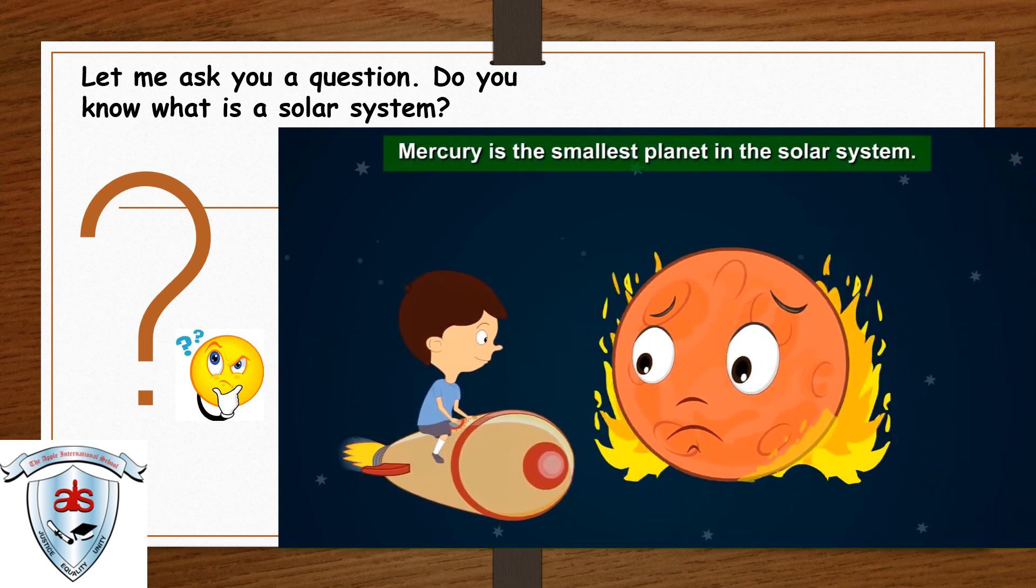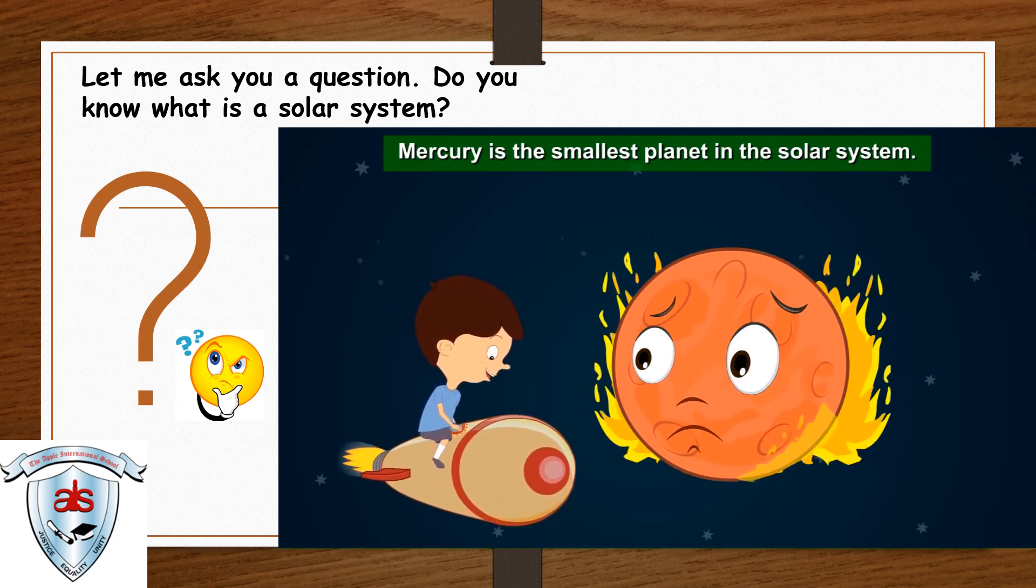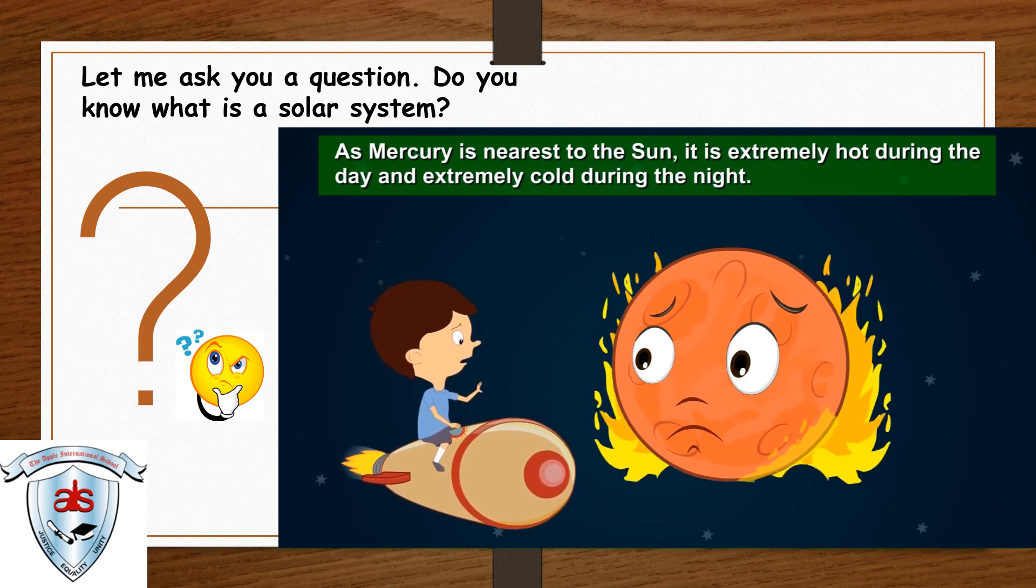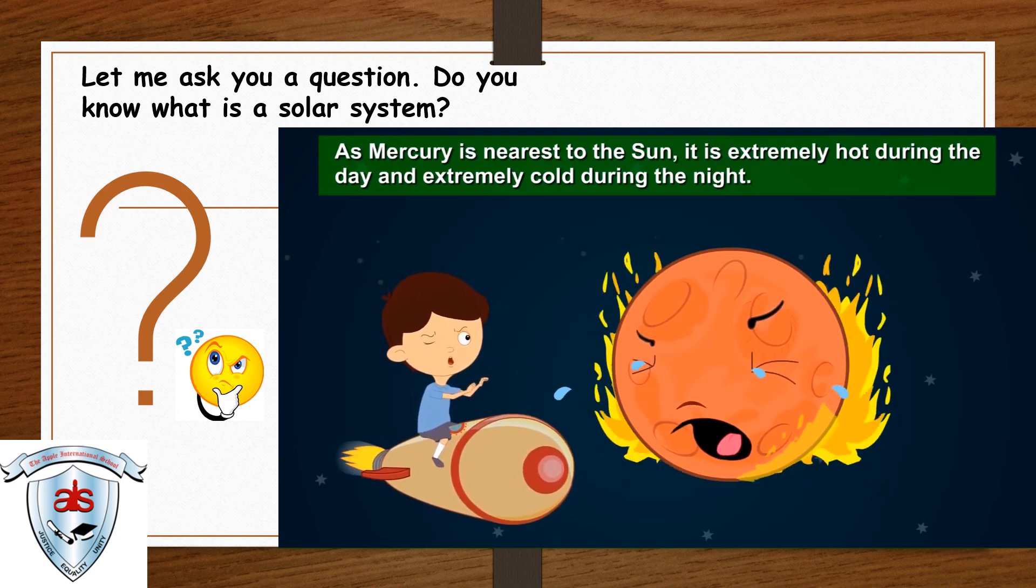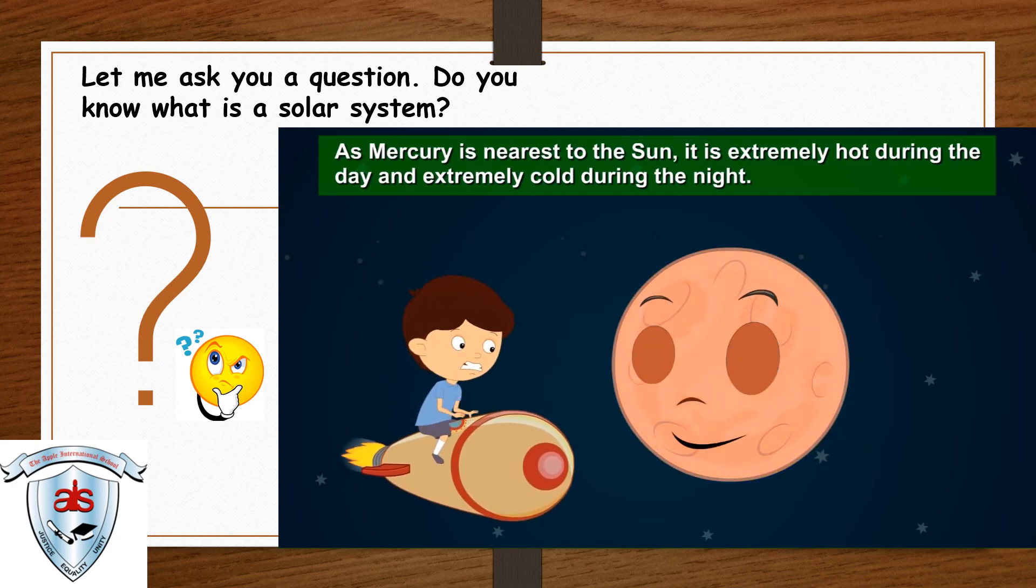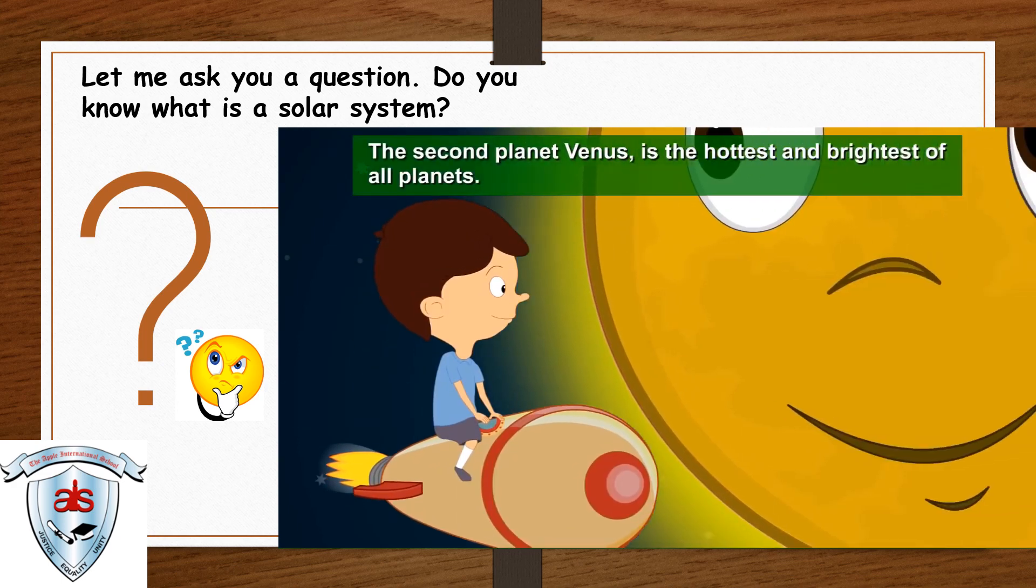Mercury is the smallest planet in the solar system. As Mercury is nearest to the sun, it is extremely hot during the day and extremely cold during the night. The second planet, Venus,